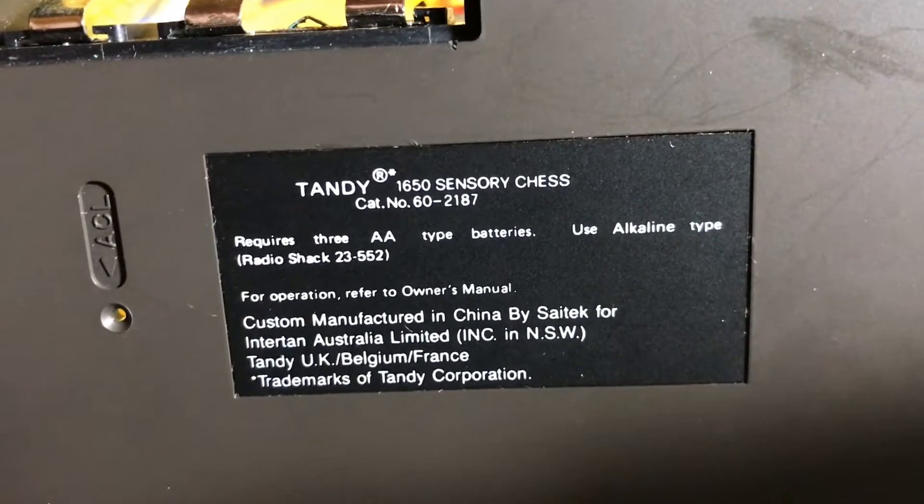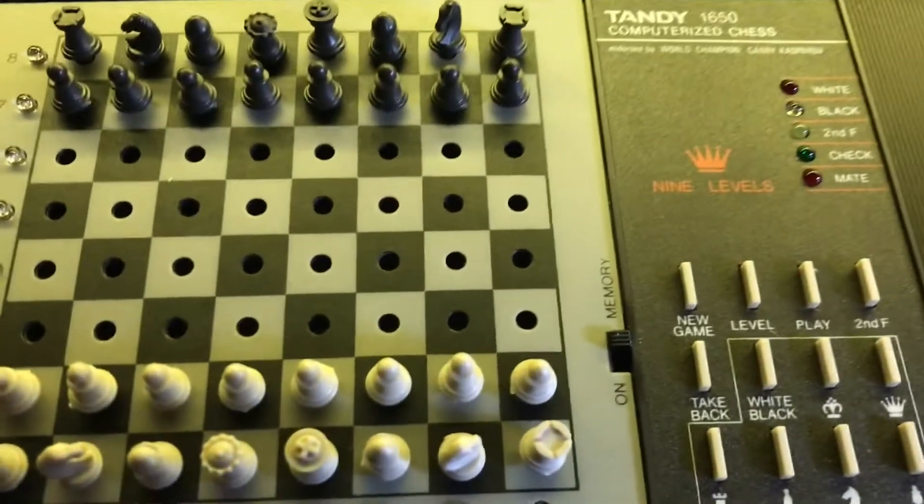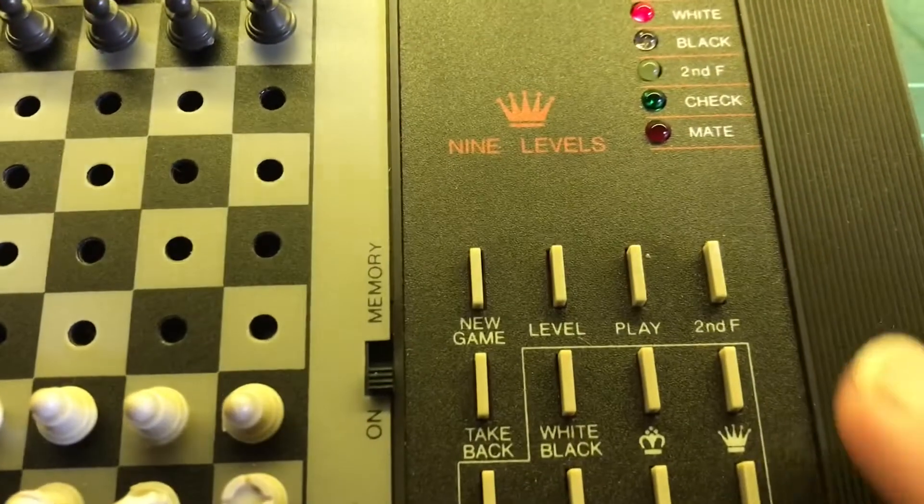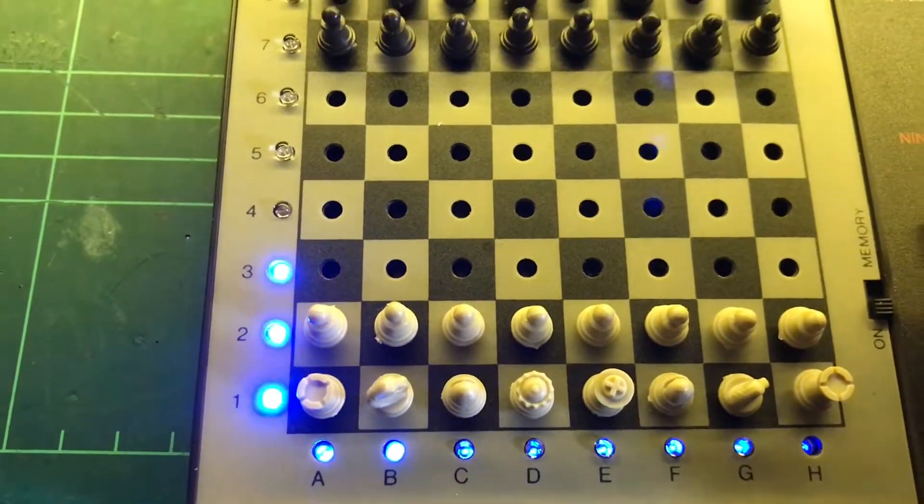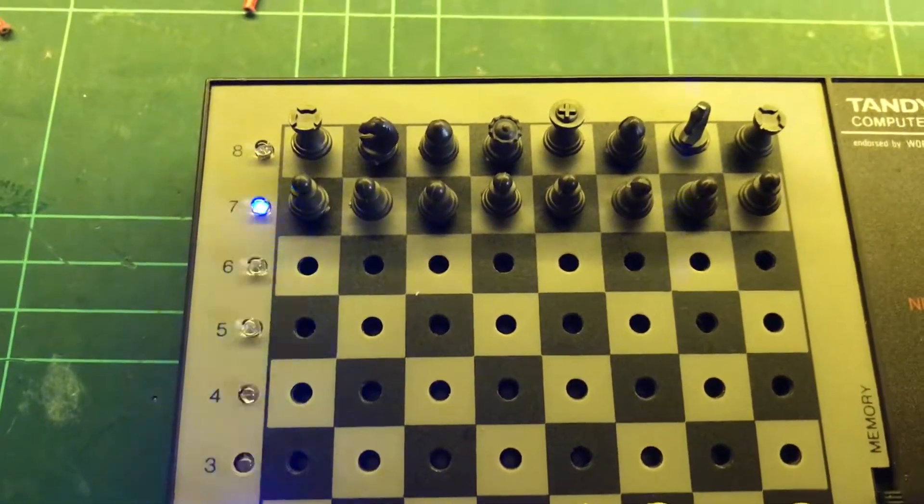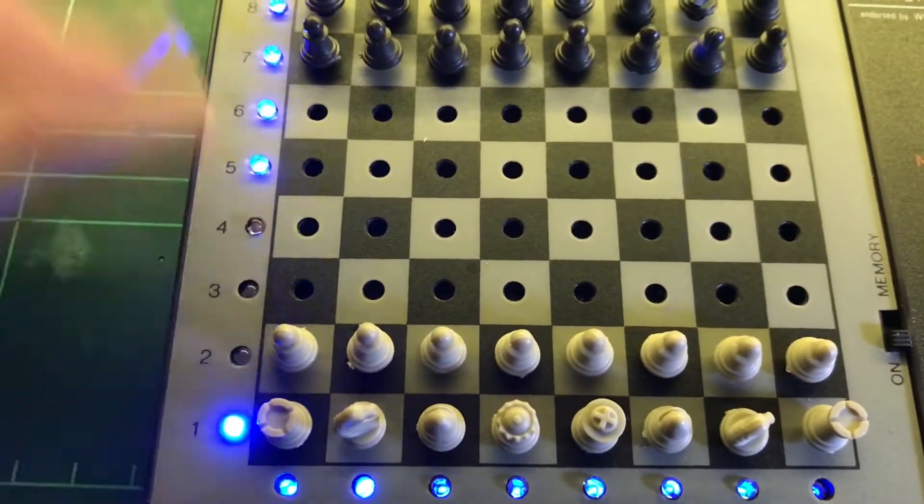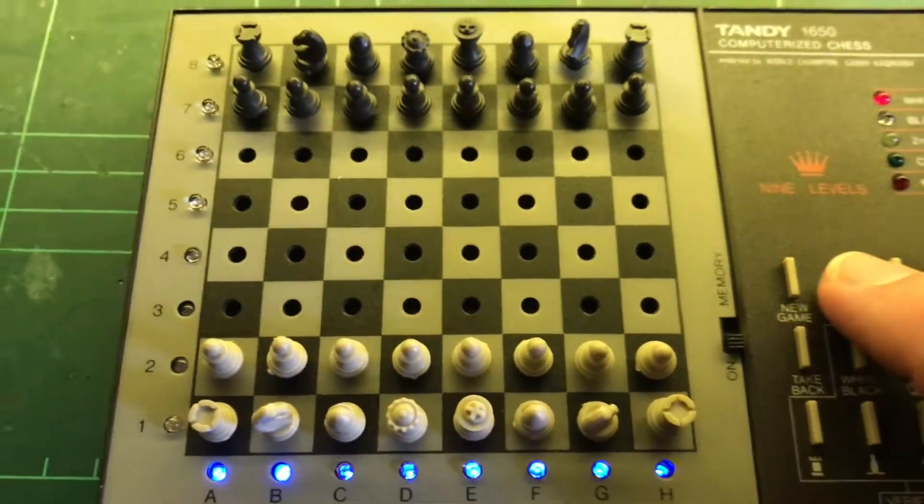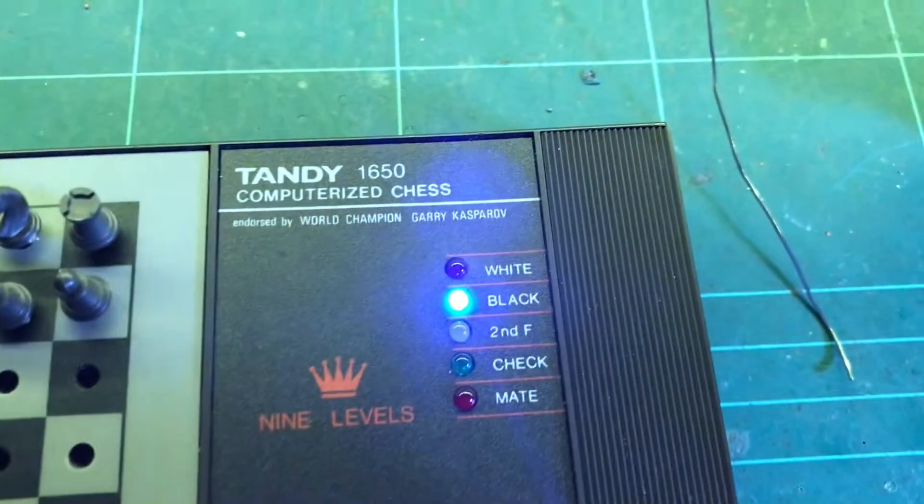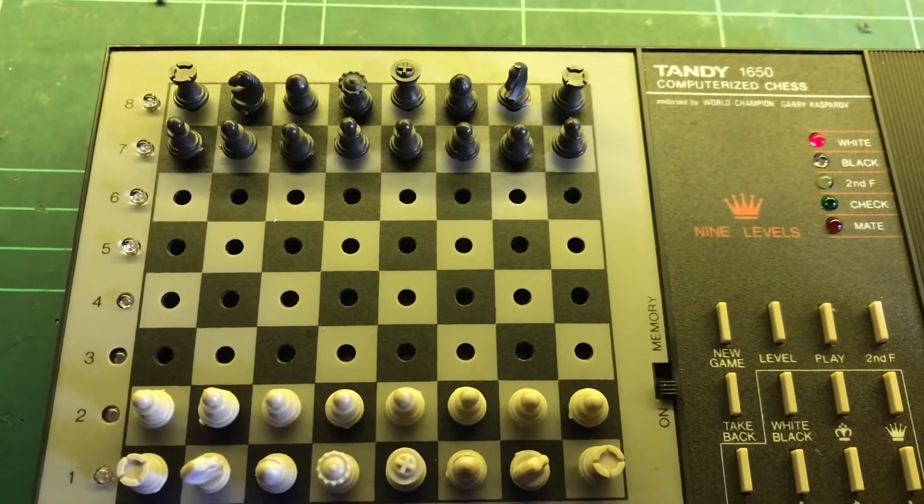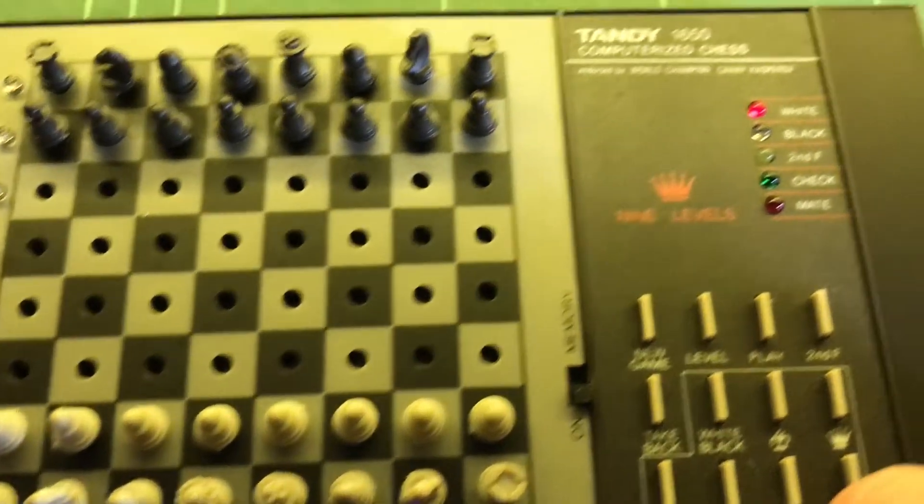So I'll put it back together and see if it works. Okay, seems to work. On white, we can set the level. As we get all the LEDs lit, there is a bit of flickering. It's not just the camera, you can see it in real life. Choose level, choose whether you're white or black. I'll try that new game.